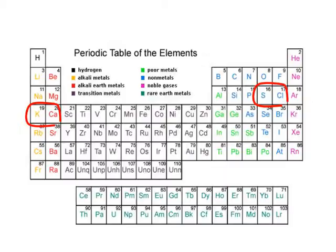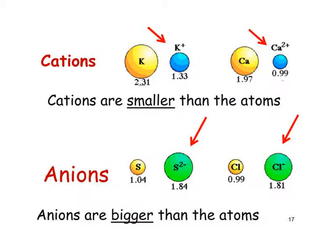Let's look at that in a little bit more detail. Circled in red are the elements involved: sulfur forming S²⁻, chlorine forming Cl⁻, potassium forming K⁺, and calcium forming Ca²⁺. These are all isoelectronic — they have the same number of electrons as argon, with the configuration 2.8.8. But the nuclear charge differs: calcium has the largest number of protons and therefore the largest positive charge in the nucleus. The actual sizes are: Ca²⁺ = 0.99, K⁺ = 1.33, Cl⁻ = 1.81, S²⁻ = 1.84.